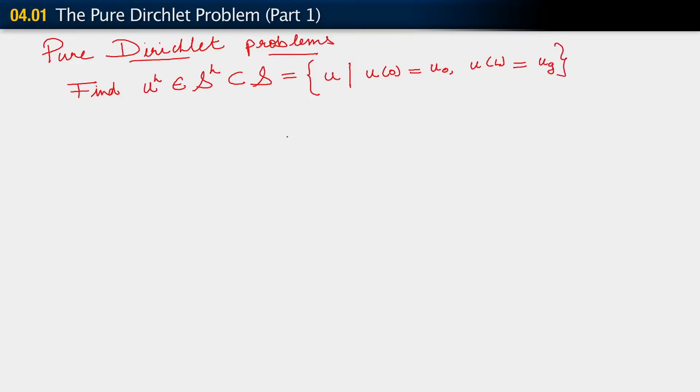And U at L equals U_G. Now, since S_H is a subset of S, what this implies for our finite dimensional weak form is that S_H consists of functions U_H. Now, they could belong to H^1, right?